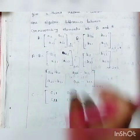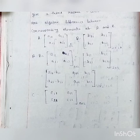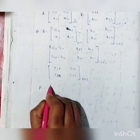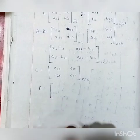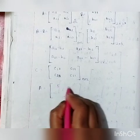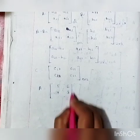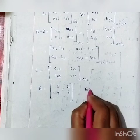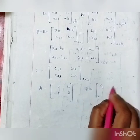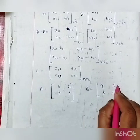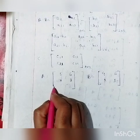Now let us add another example — example A. We will do a subtraction example. Matrix A is [5, 6; 7, 8] and matrix B is [4, 6; 3, 1]. Close the bracket. This is the matrix setup for A minus B.